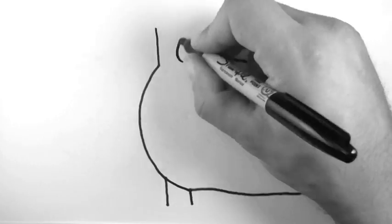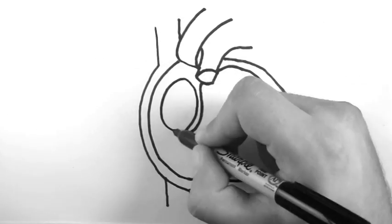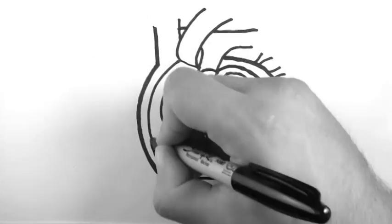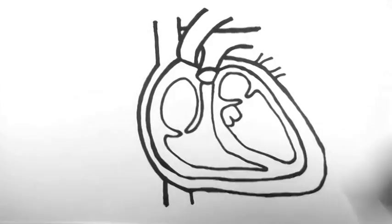So I'll just draw the heart up quickly here, and I'm going to draw this so that it's been dissected to show all the chambers of the heart and all the valves.